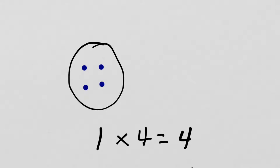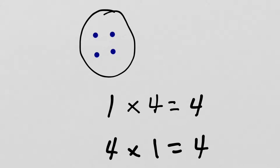So, what else can I do with this now that I know that 1 times 4 equals 4? Well, I can use the commutative property to find the turnaround fact. 4 times 1 equals 4.